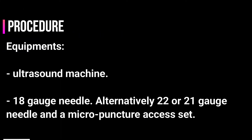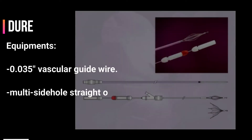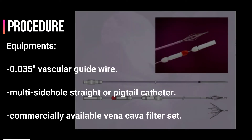Equipment includes: ultrasound machine; 18-gauge needle, or alternatively a 22 or 21-gauge needle and a micropuncture access set; a 0.035 vascular guide wire; a multi-sidehole straight or pigtail catheter; and a commercially available vena cava filter set.